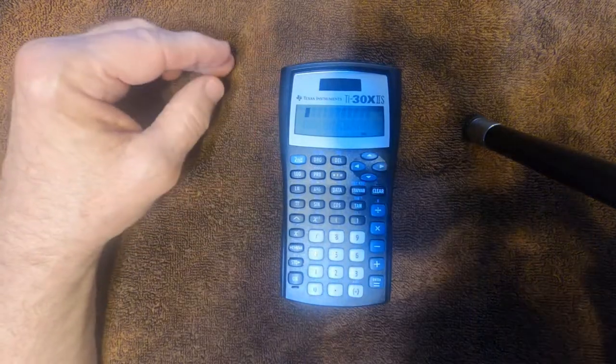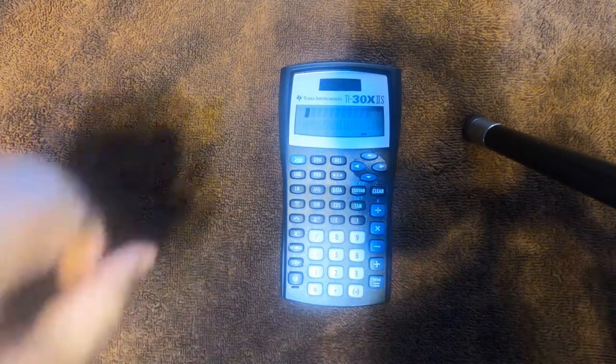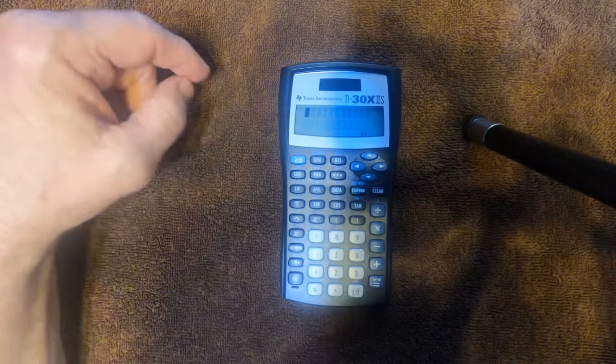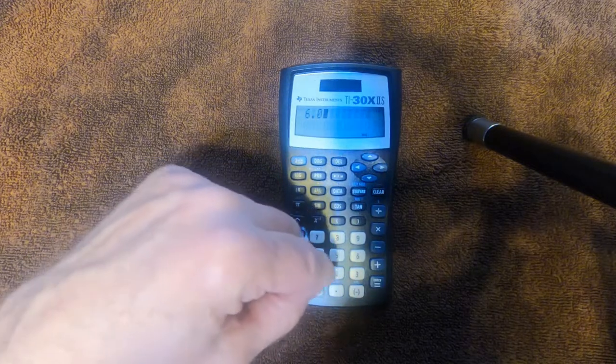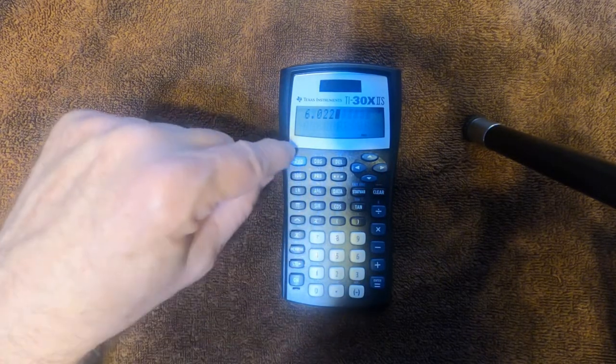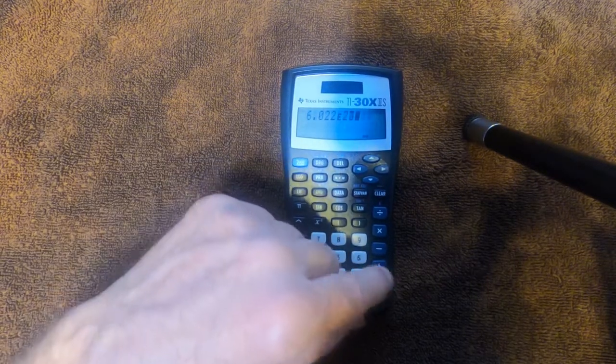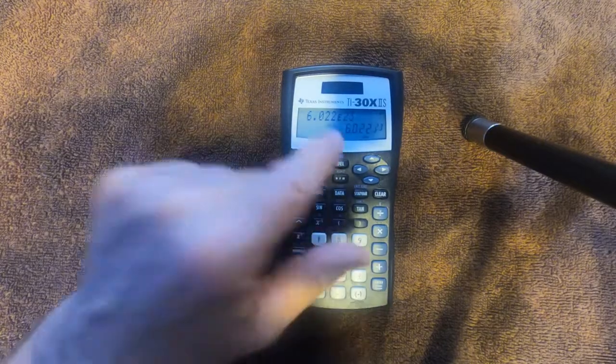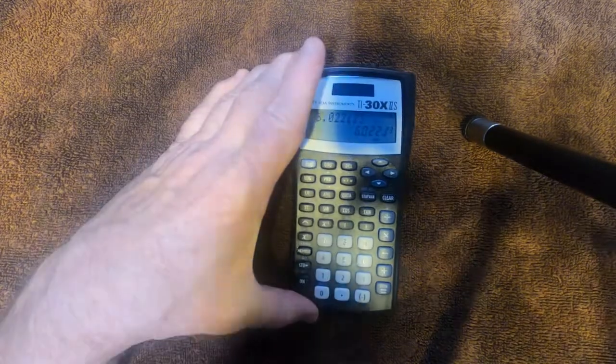First thing is exponents. Let's say we want to use 6.022 times 10 to the 23rd in a calculation. You just press 6.022, and then see that EE right there? It's purple, so we press the second, then EE, and then the power, 23. And that's how it writes 6.022 times 10 to the 23rd.